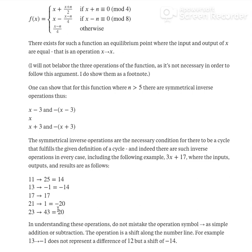And two outputs, -20 and 20, which we consider 3 more than 17. The operations are input 11, output 25; input 13, output -1; input 21, output 1; input 23, output 43.